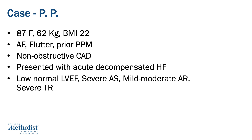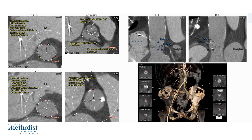She was diuresed and optimized from a heart failure standpoint, and then a routine CT TAVR protocol was obtained. These are the usual lumen-derived measurements of the aortic root annulus and the iliofemoral axis. On the top left, you'll see the aortic annulus measurements. This patient clearly has a small aortic annulus with diameters of 18 by 21 millimeters, min and max, with an average diameter of 19.7 millimeters. The annular area is about 307 square millimeters and the perimeter is about 62.9 millimeters.